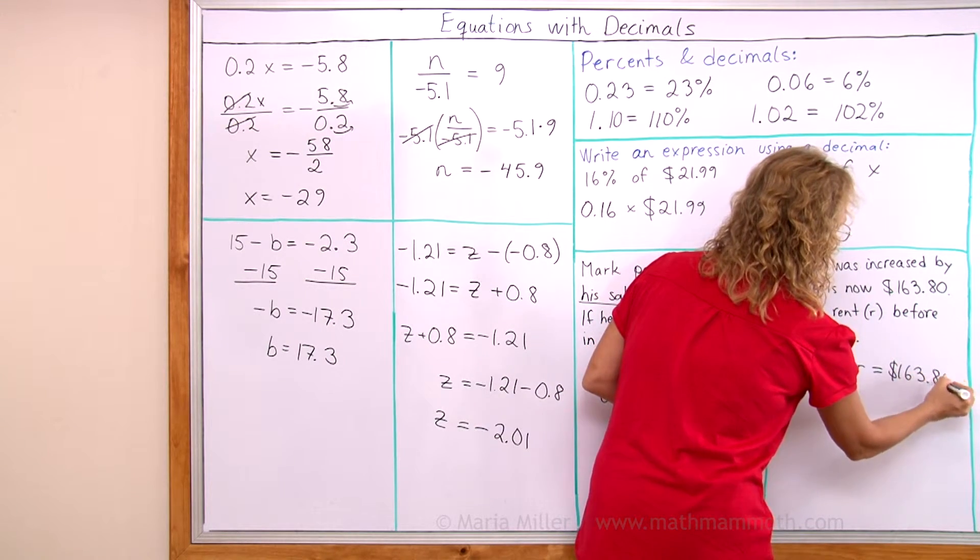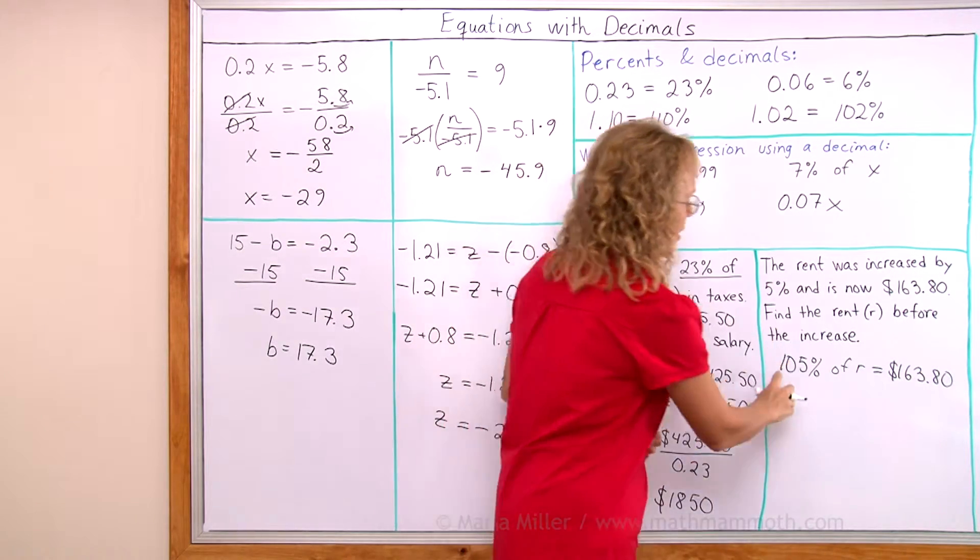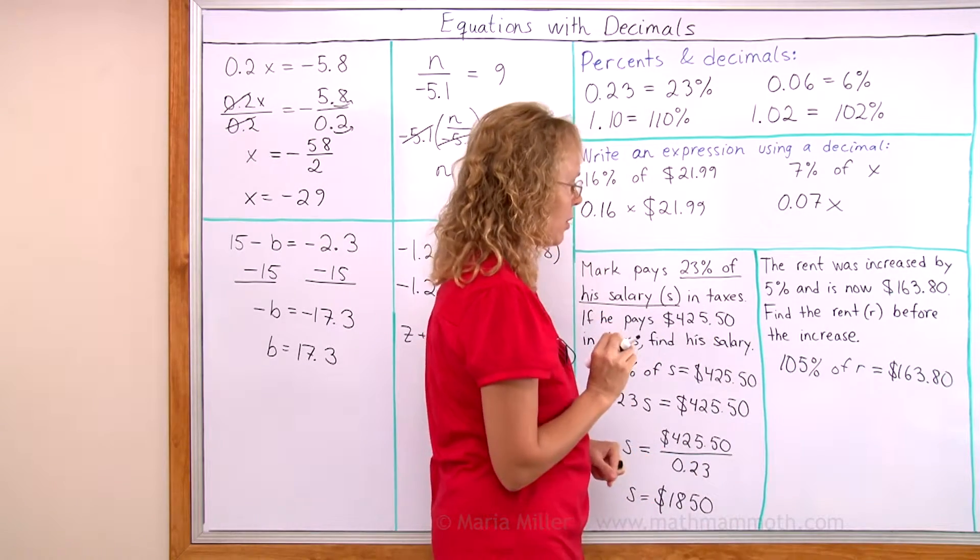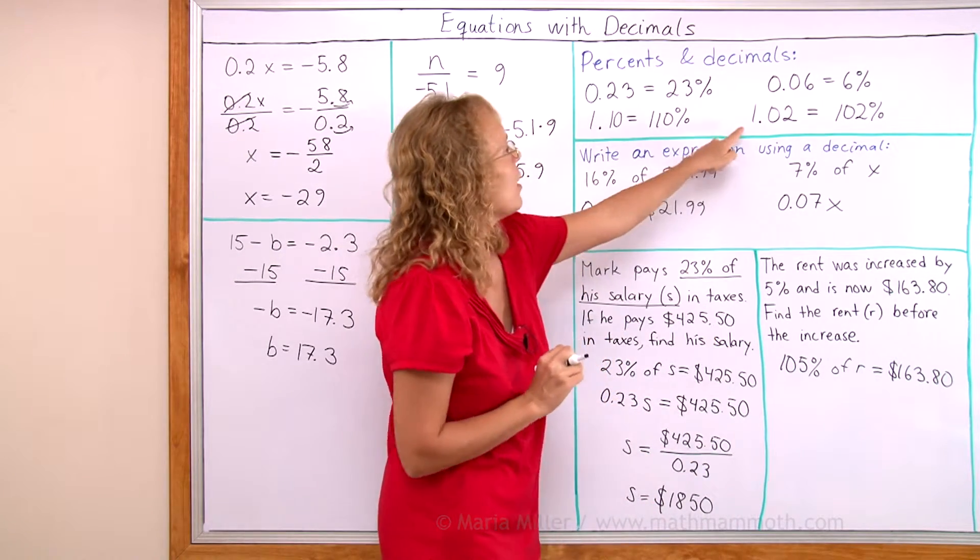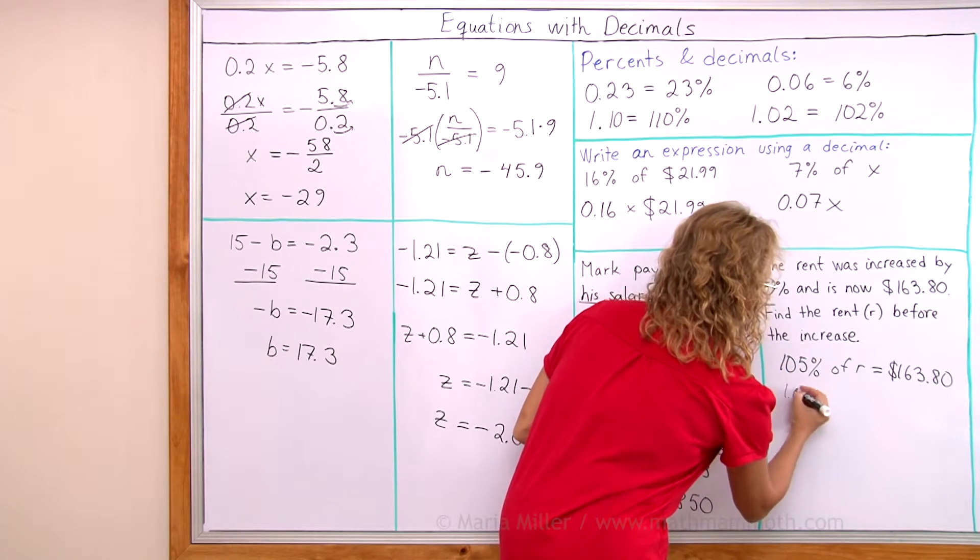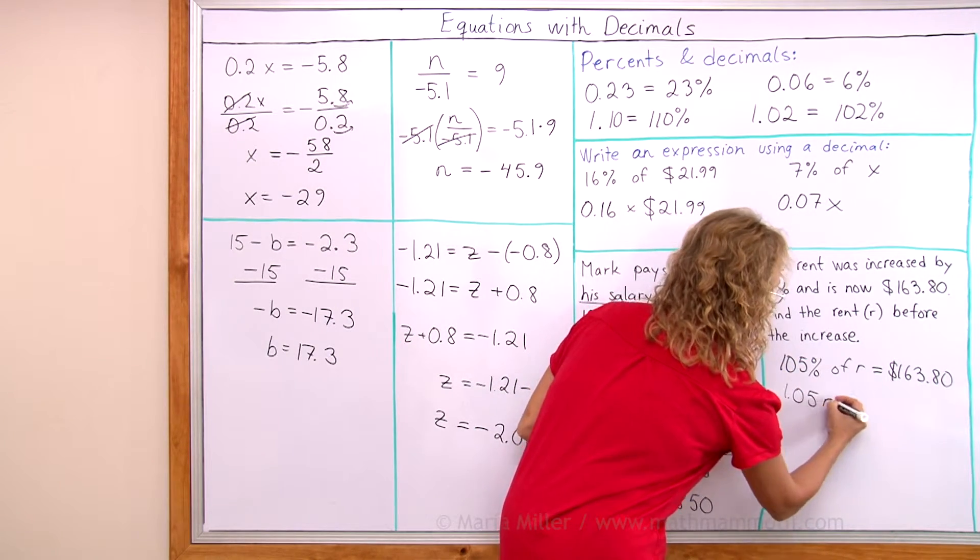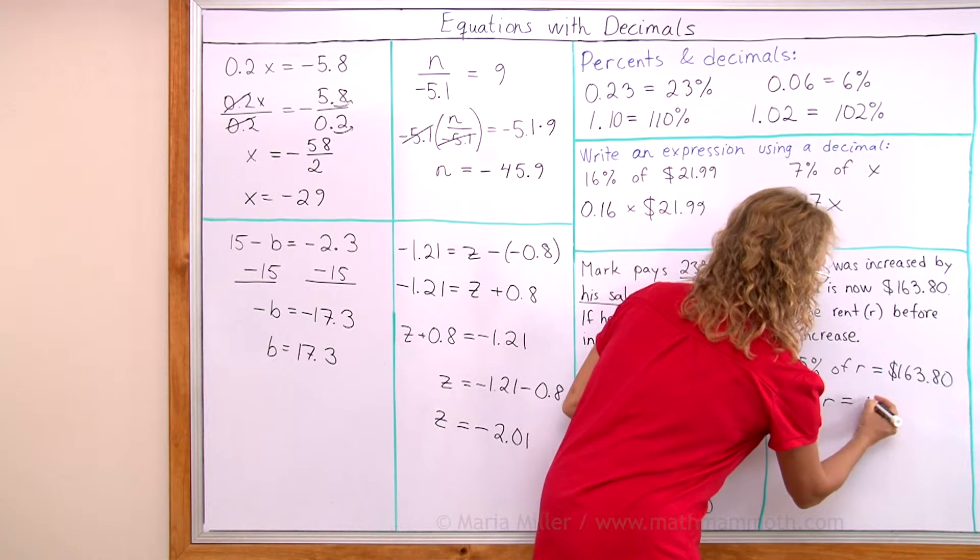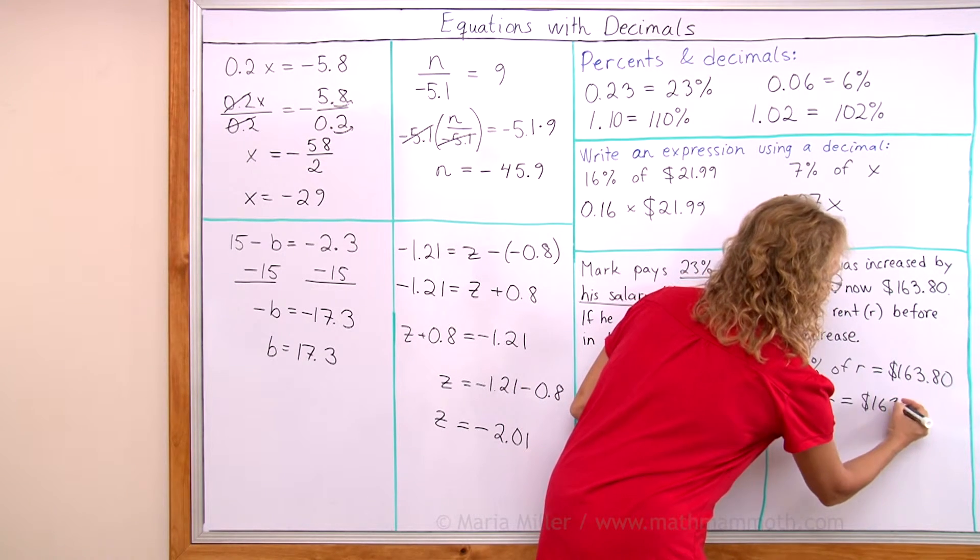Because this is the rent after the increase. Now I just write this as a decimal. Here's a very good example. It becomes 1.05 and then R times R equals this money amount, $163.80.